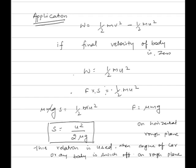If the body is moving on a horizontal plane, then force F equals μ mg, which is the friction force. Work done by the friction force equals μ mg into s, which equals half m into u². Therefore, s equals u² upon 2μg. This relation is generally used when the engine of a car is switched off on a road; the distance traveled by the car before coming to rest is given by s equals u² upon 2μg.